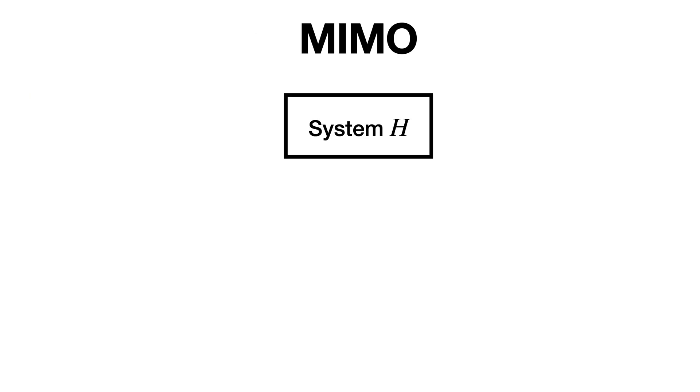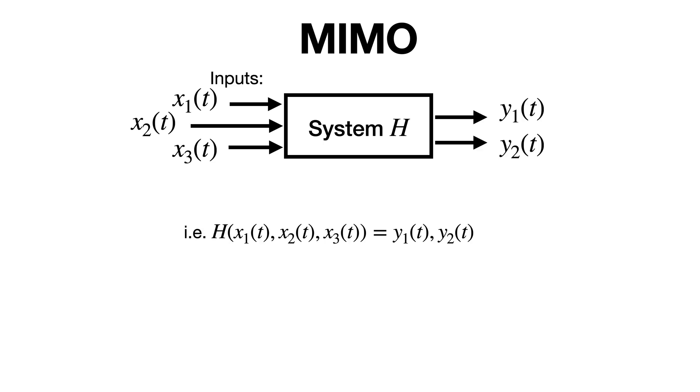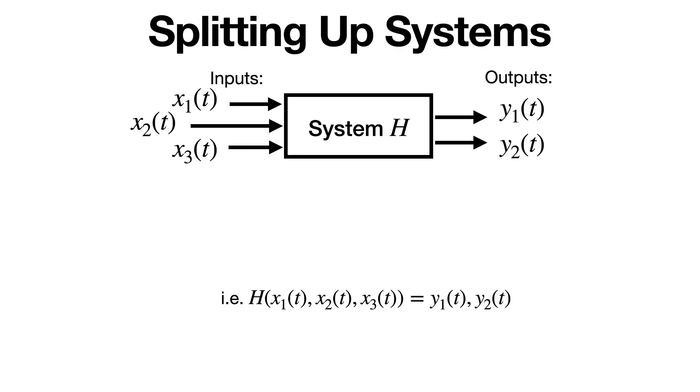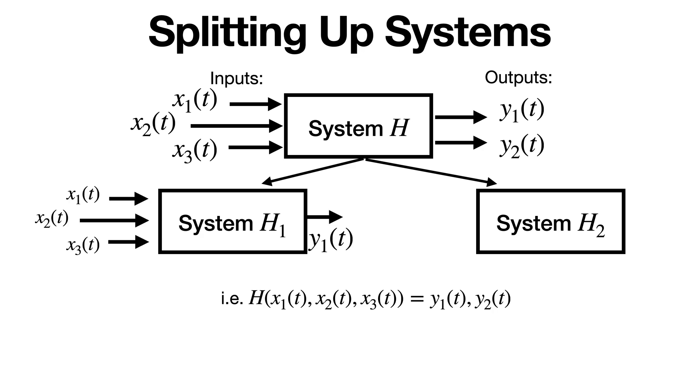Systems can and often do have multiple input and output signals, which we represent with multiple arrows and sometimes subscript with numbers if needed. Here we have a system containing three inputs and two outputs, which we represent as H of X1, X2, X3 equals Y1, Y2. One thing that may be helpful to remember is systems with multiple outputs can often be broken into smaller systems, each producing a single output. Whether you represent a system with a single system or with a set of subsystems, it's really just depending on what your goal is. In this case, we're splitting up H into H1 and H2 to make things a little bit easier to understand.